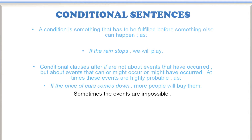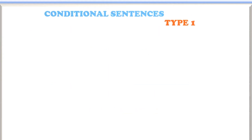Sometimes the events are impossible, so in main clauses there can be impossibility. Like: if I had wings, I would fly. You can see here, 'if I had wings' is just an imaginary or impossible condition. This is another type of conditional sentence. But today we will talk about only type 1 conditional sentences. There are three types of conditional sentences; we will talk about type 1 in this video.